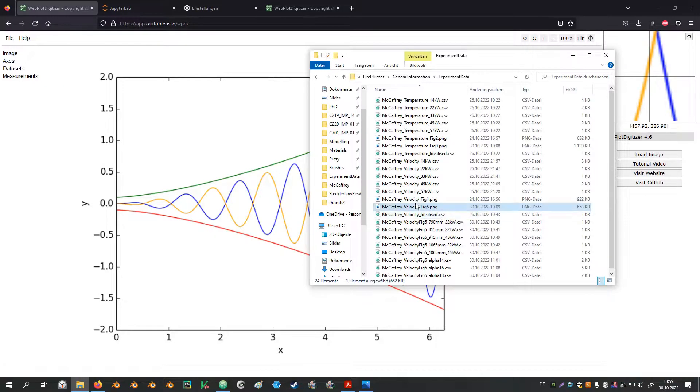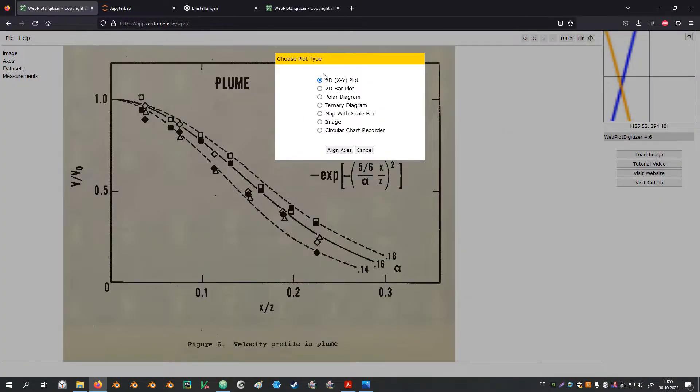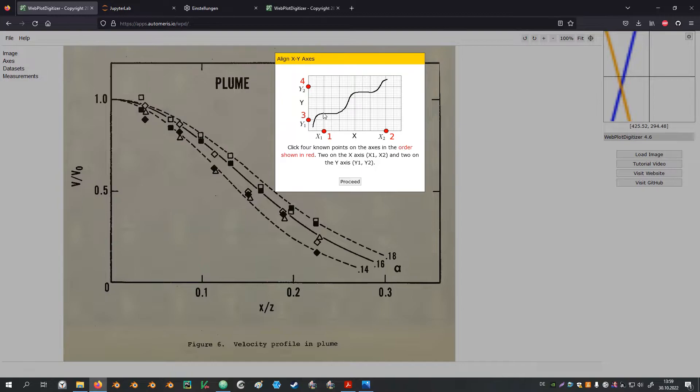Let's load the image, either via the menu on the top left or just by dragging the image on the workspace. A menu pops up that asks you for the type of plot. In our case it's just a simple 2D XY plot. After hitting the axis align button we will be asked to identify the plot axis by adding four points. The first two points are for the X axis and the second two points are for the Y axis.